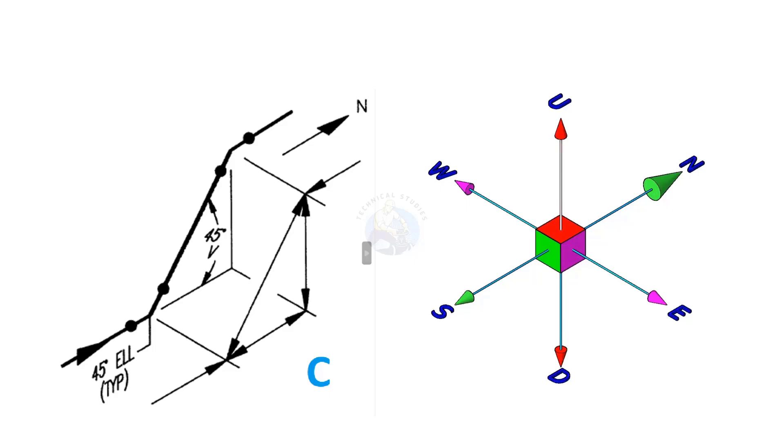In this drawing, the pipe goes to the north, then turns 45 degrees between the up direction and the north direction.